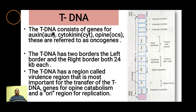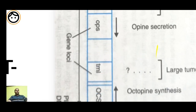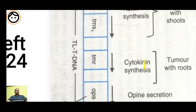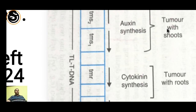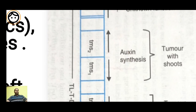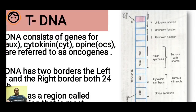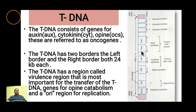Looking at the T-DNA in detail: it has left and right borders and is transferred into the plant. It carries genes for auxins, cytokinins, and opines, which are also referred to as oncogenes. Both borders are approximately 20 kb each, and the T-DNA has a virulence region most important for T-DNA transfer and opine catabolism. The gene arrangement inside T-DNA includes a cytokinin synthesis gene (responsible for tumor with roots), an auxin synthesis gene (responsible for tumors in shoots) — TMS2, TMS1, and TMR for roots — along with a few genes of still-unknown function.